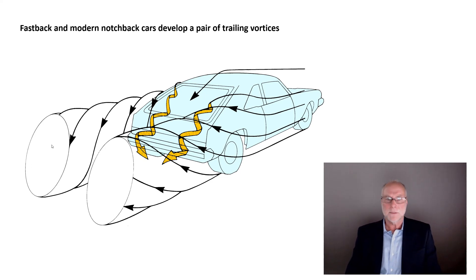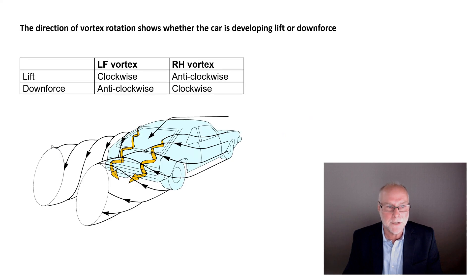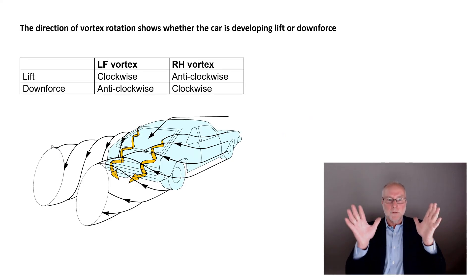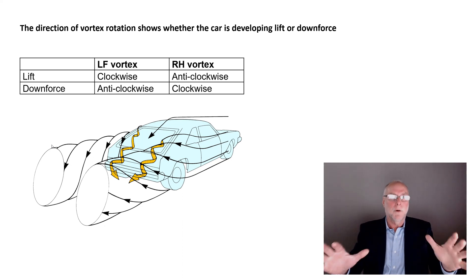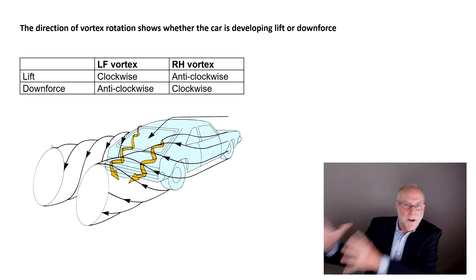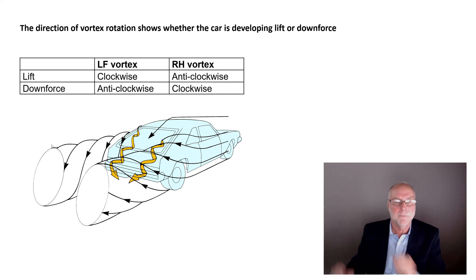Big swirlies coming off the back of the car. So what? What's that got to do with lift or downforce? Well, here is the really tricky thing. The direction those vortices rotate show if the body as a whole is developing lift or downforce. Let's just look at the right-hand vortex, looking from behind.